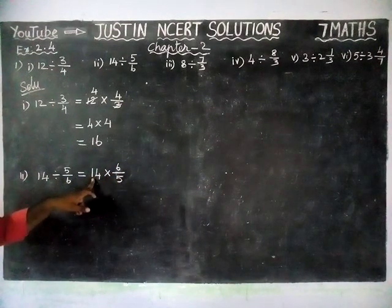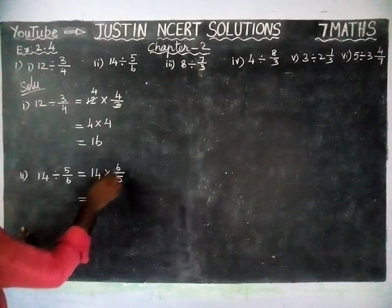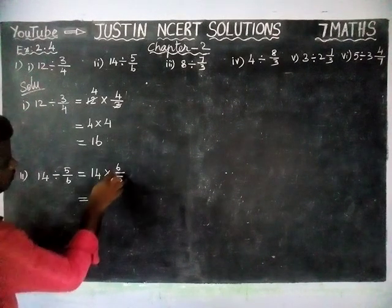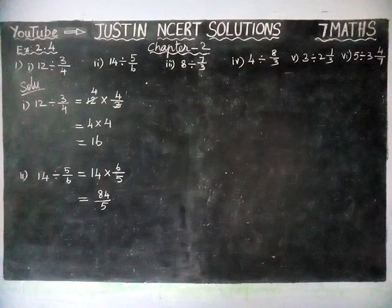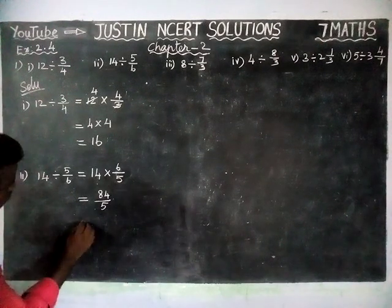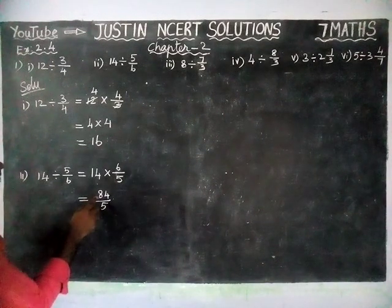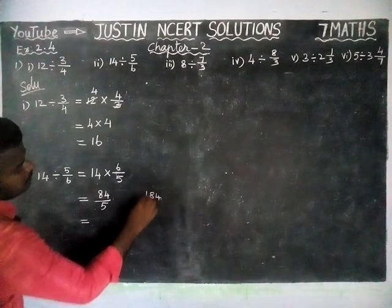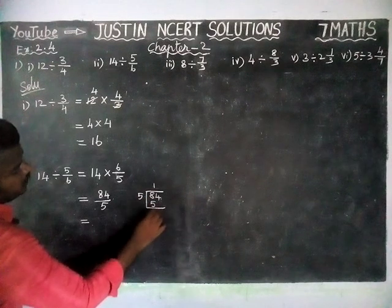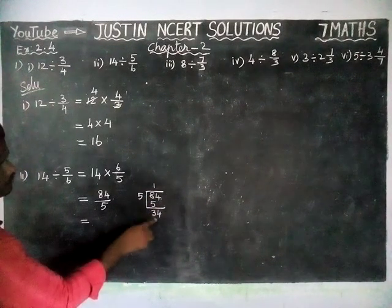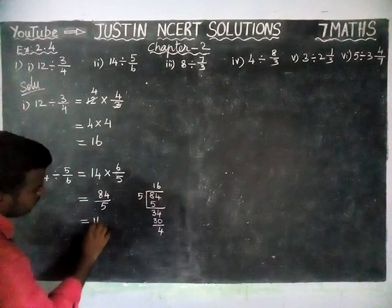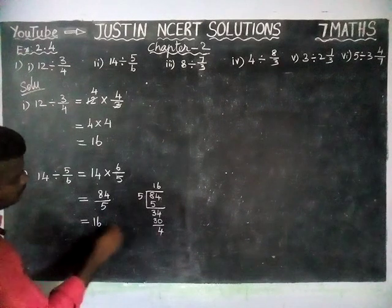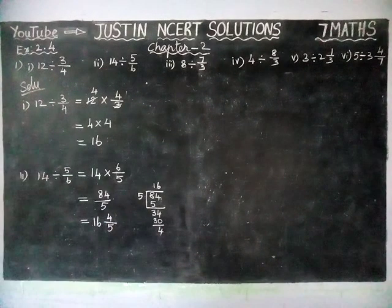And if it is possible to simplify, we can simplify. Here we cannot simplify, so we are multiplying: 14 into 6/5. That gives 84 divided by 5. We can convert into mixed fraction. How many 5s in 84? We have 16 fives making 80, with remainder 4. So the quotient comes in the whole part: 16, and the remainder in the numerator over the divisor as denominator. So, 16 and 4/5 is the answer for the second question.